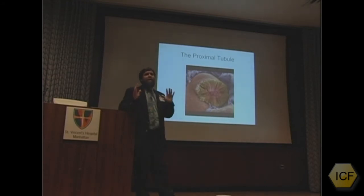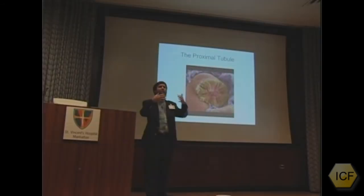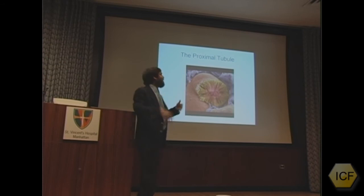The proximal tubule, though I've drawn it as a round circle, I want to show you this picture of what it really looks like. This is another electron microscopy slide of the proximal tubule. It's all of these interdigitating membranes that come out and provide a gigantic surface area.